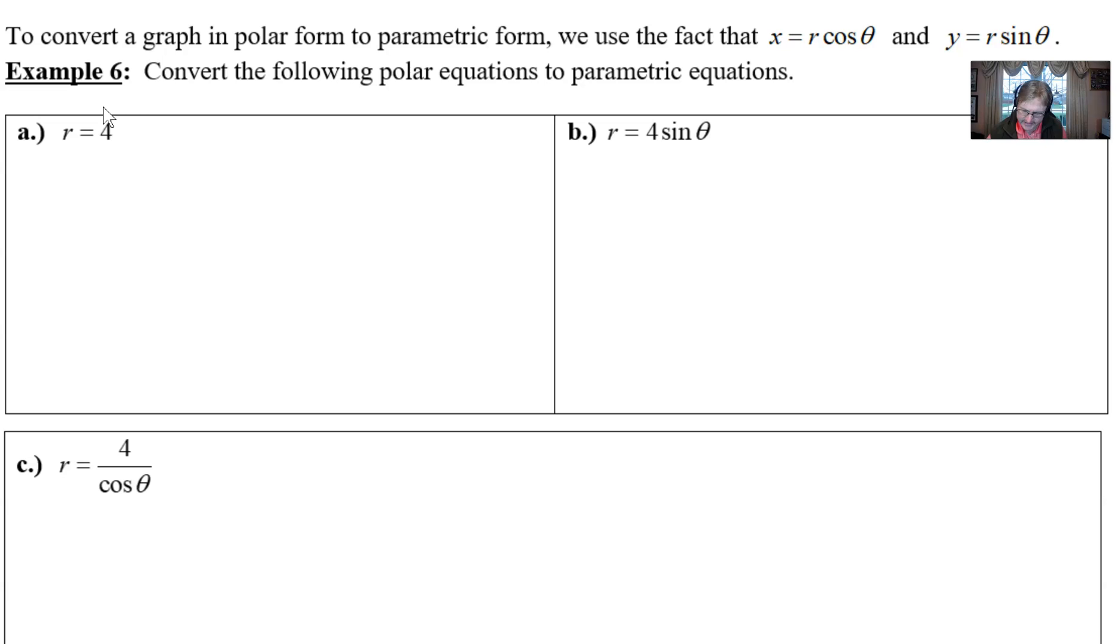For the conversion, what you're going to do is use the idea that indeed x is equal to the r value times the cosine function. So r equals 4 times the cosine of theta is half of your parametric equation, and then the other half would be 4 times the sine of theta.